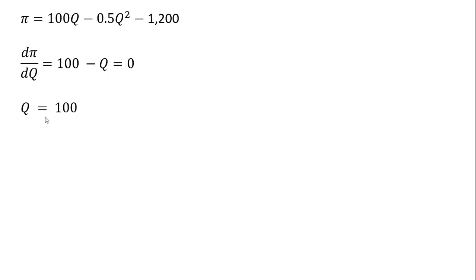To get the profit maximizing price, we're going to take this Q of 100 and plug it into the inverse market demand. The inverse market demand given on the last slide was this. Where we have the Q, we will now plug in 100. So the profit maximizing price here is $62.50.